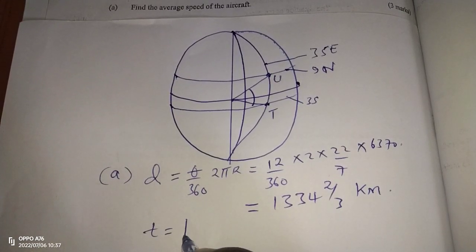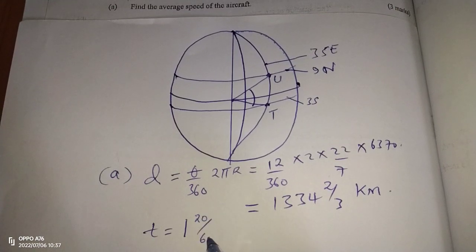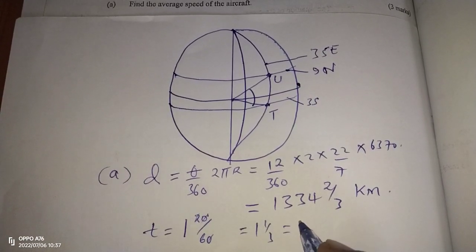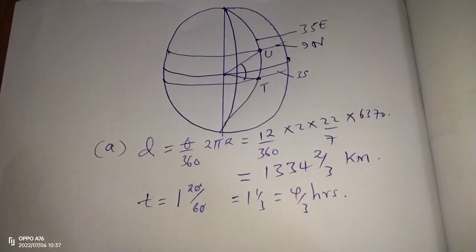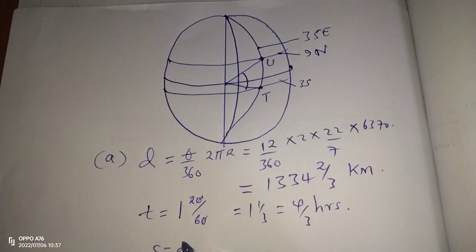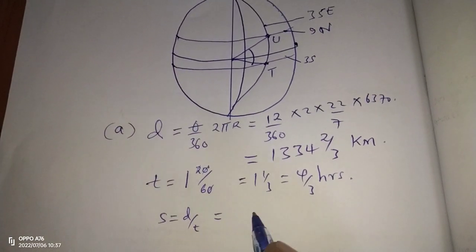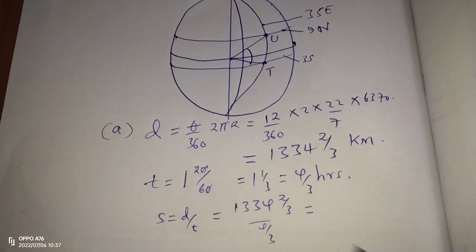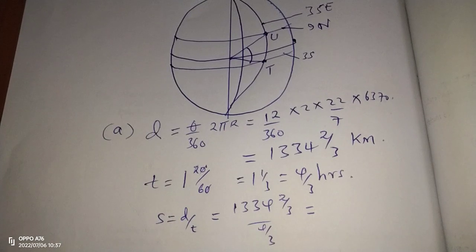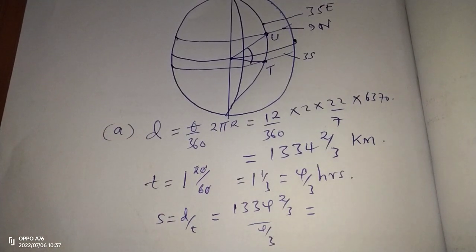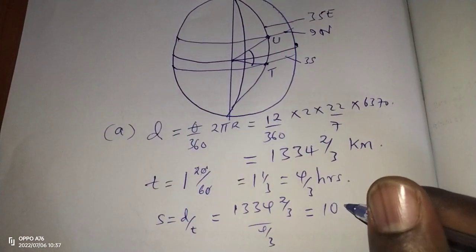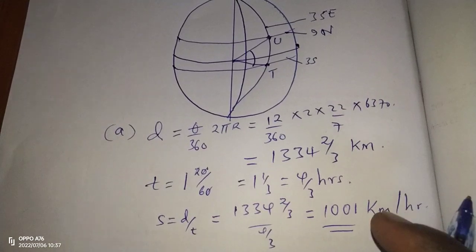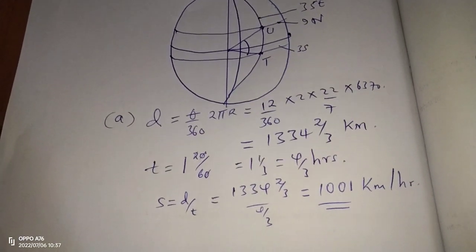The time taken is 1 hour 20 minutes. We convert 20 minutes to hours by dividing by 60, giving us 1 and one-third hours, or 4/3 hours. Therefore, speed = distance ÷ time = 1334⅔ ÷ 4/3, which gives us exactly 1001 kilometers per hour. That is the speed of the first aircraft.